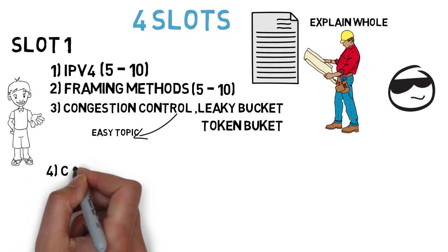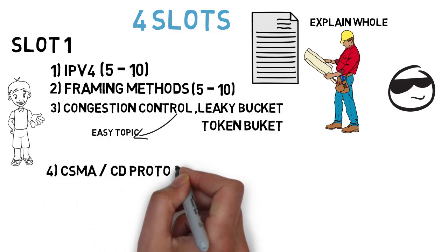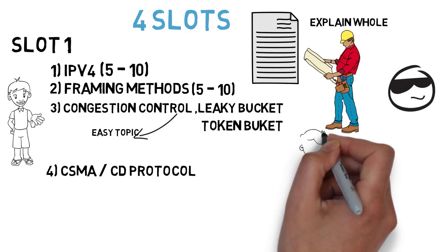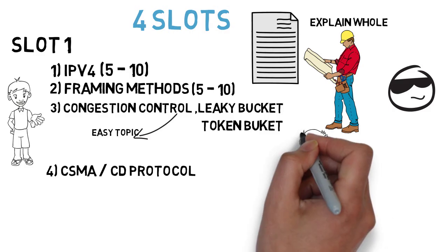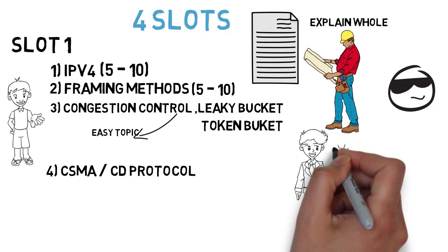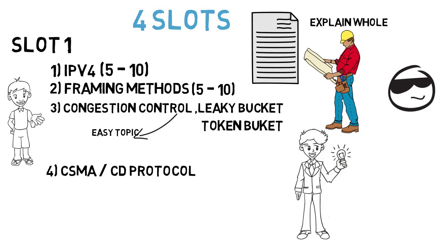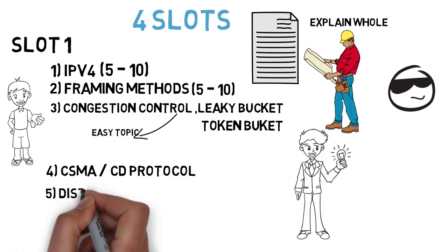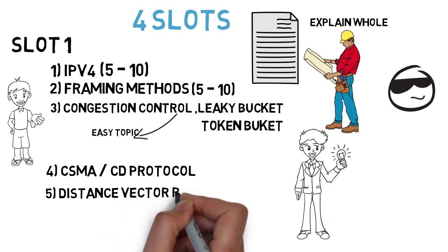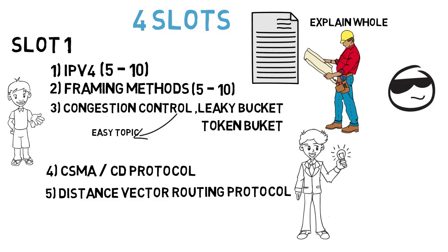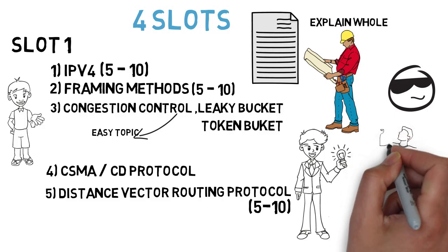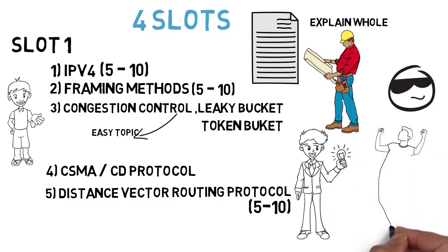The fourth question is the CSMA/CD protocol — explain how collisions are handled in CSMA/CD. This is a purely theory question, so if you read it once or twice you will easily understand the concept. The last question for Slot 1 is: explain the distance vector routing protocol, what is the count to infinity problem, and how to overcome it. This can come for five to ten marks, mostly five marks.